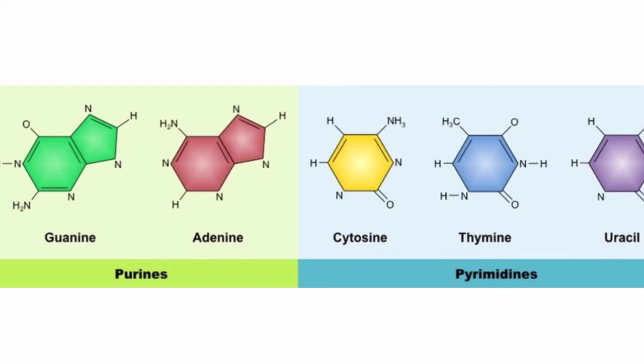In Purines there are two rings attached — a six-membered ring and a five-membered ring. That is the identification of Purines. But if we talk about Pyrimidines, there is a single ring present. So there is a basic structural difference between Purines and Pyrimidines.